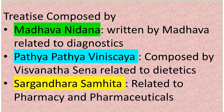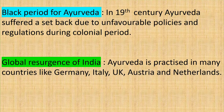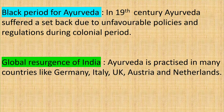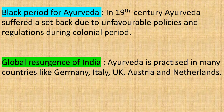Sharngadhara Samhita is related to pharmacy and pharmaceuticals. Ayurveda also faced a black period in its development: in the 19th century it suffered a setback due to unfavorable policies during the colonial period. Today, Ayurveda is practiced in many countries, including Germany, Italy, the UK, Australia, and the Netherlands, showing a global resurgence.